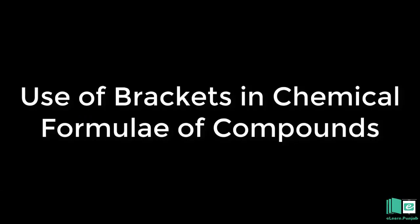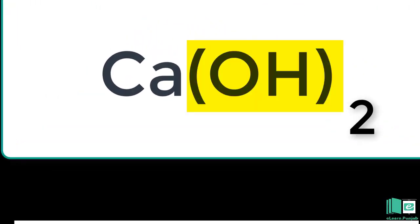Use of brackets in Chemical Formula of Compounds. Sometimes brackets are used in the chemical formula of a compound. These show that everything inside the bracket is multiplied by the number immediately after the bracket.